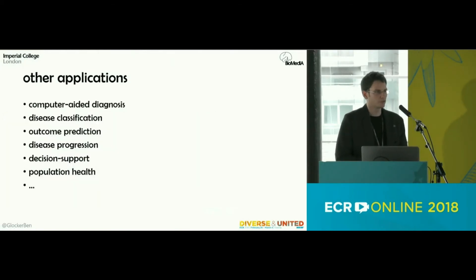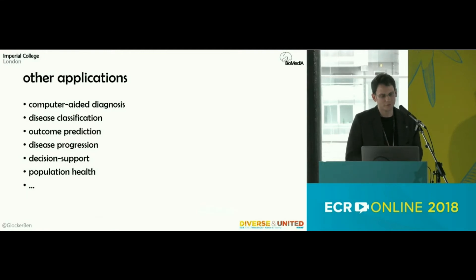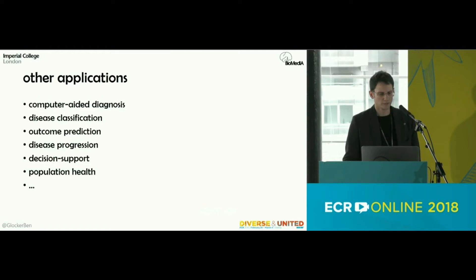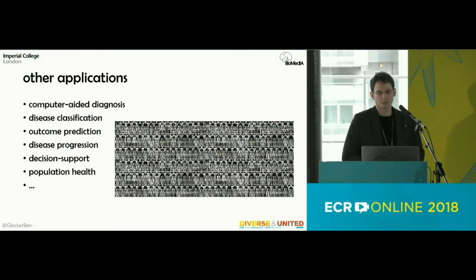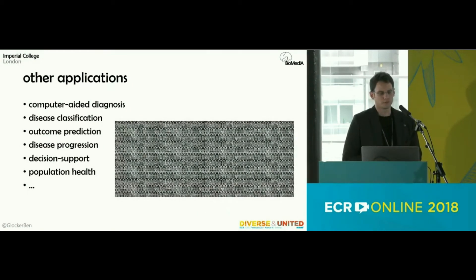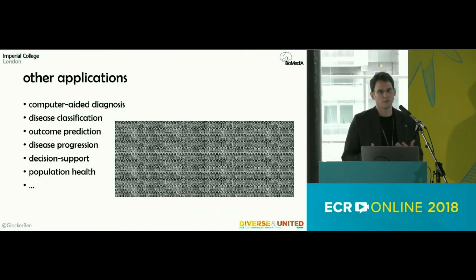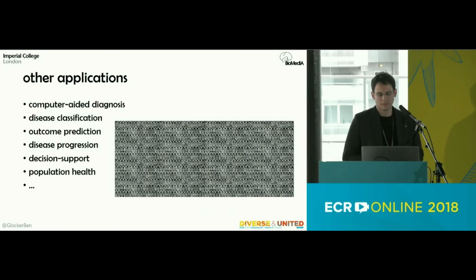There are many other applications, including computer-aided diagnosis, disease classification, outcome prediction, disease progression, and decision support. On a population health level, studies like the UK Biobank Imaging Study are collecting comprehensive imaging from 100,000 subjects. To correlate this with demographics, lifestyle, and genetics, you need advanced statistical tools to extract relevant information from images.